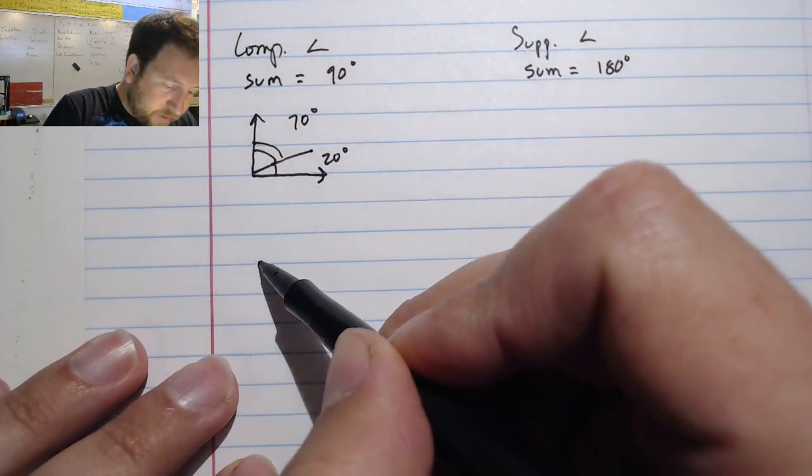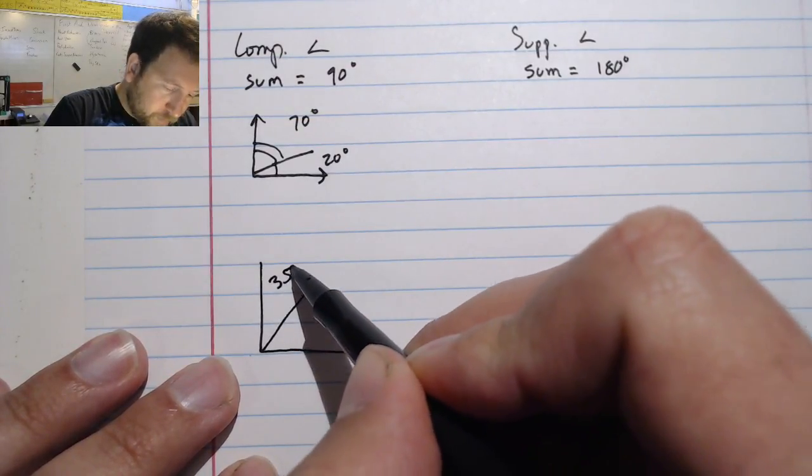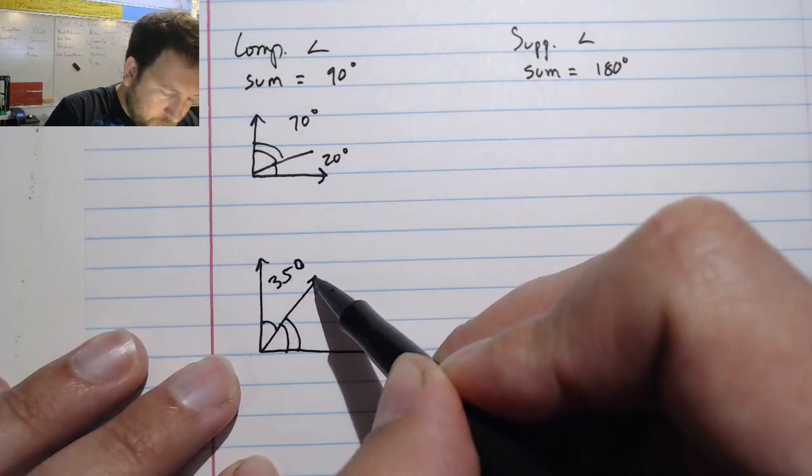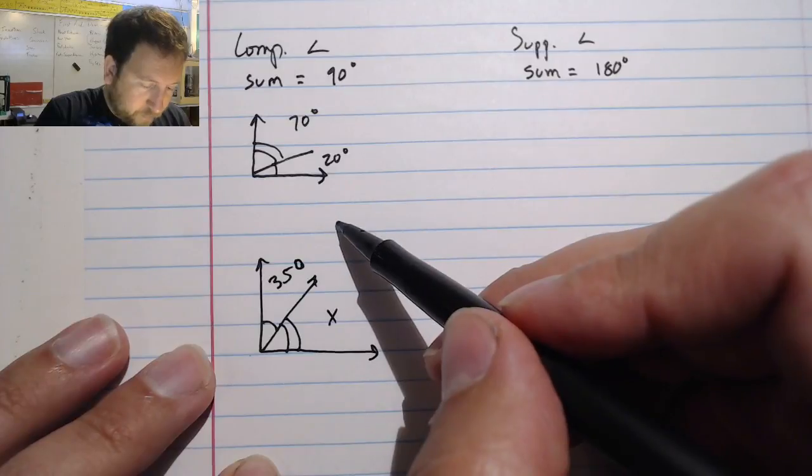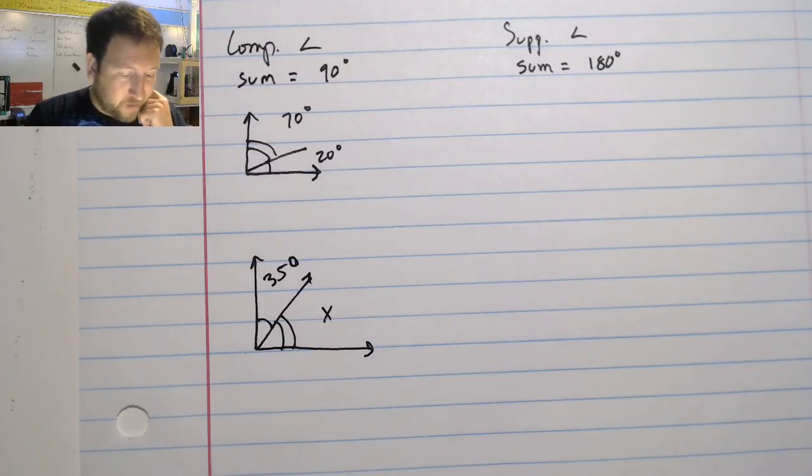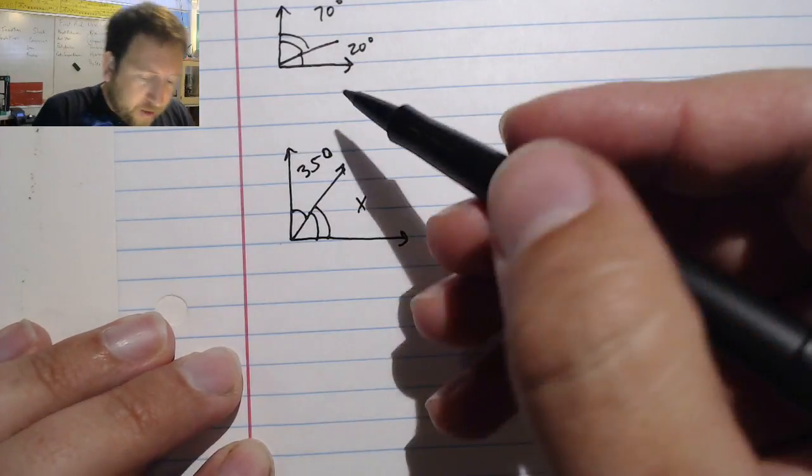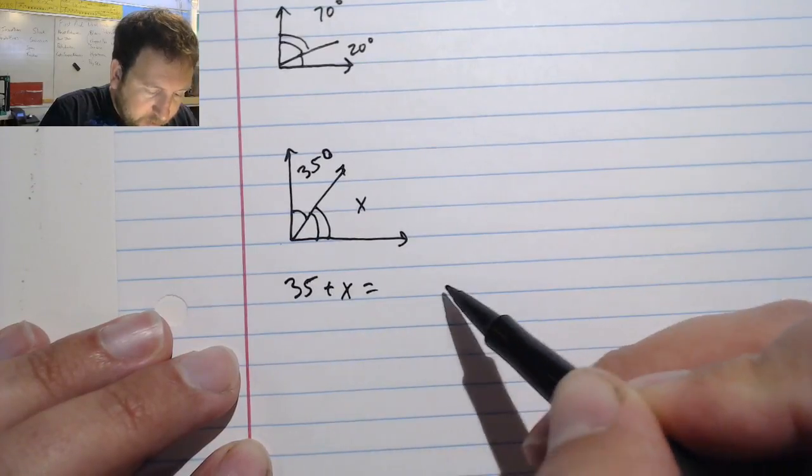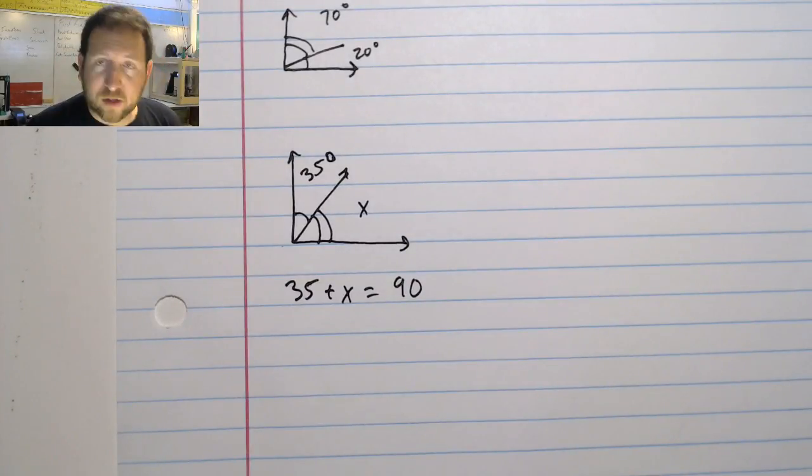They're going to give me angles. That's supposed to be degrees. And they're going to say these two angles are complementary. What's the measure of x? Well, we can figure this out pretty easily because I know that the sum of these two is 90. So if I wanted to, I can write this out as 35 plus x equals 90. And this is an easy one-step addition algebra problem that I can solve pretty easily.